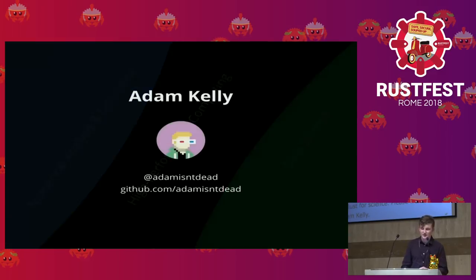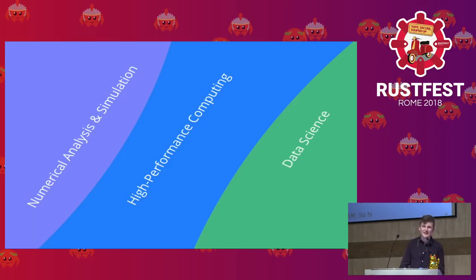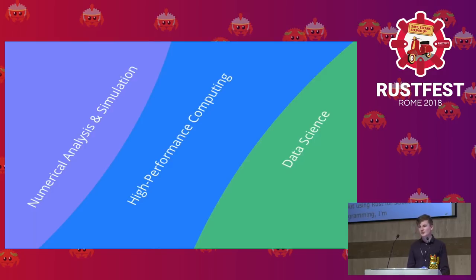So numerical analysis, simulation — things like simulating physical systems, doing high-performance computing on supercomputers, clusters, multi-threaded programming, and then data science: statistical analysis, machine learning. I'm really going to be talking more about the first two, because data analysis is a completely different sort of thing.